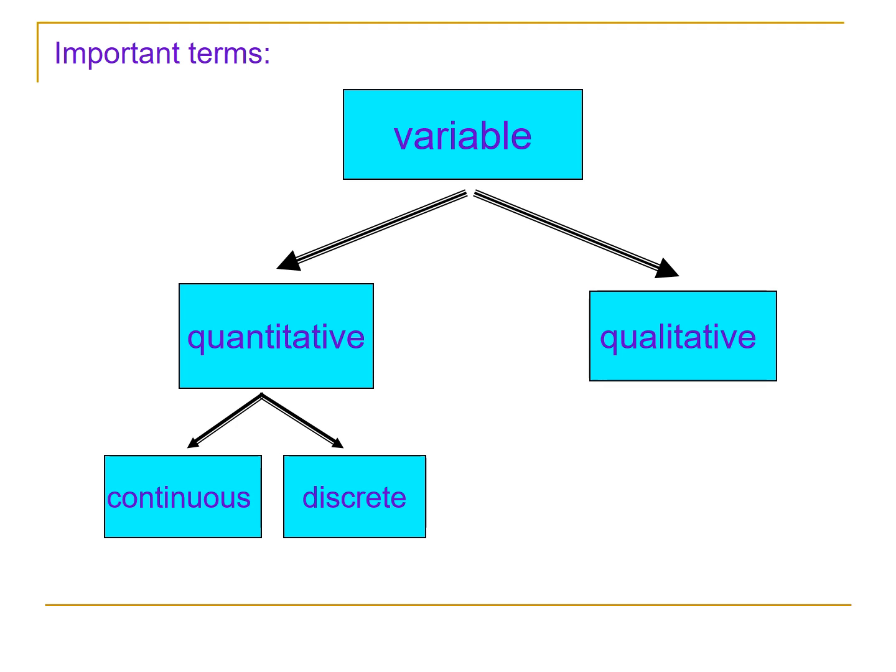A variable is discrete when you can only have counting values, like the number of students enrolled in a statistics subject. You cannot say that there are 30.5 students enrolled. You cannot explain what the 0.5 means. Therefore, the variable number of students enrolled is an example of a discrete quantitative variable. Another example is the number of cars in a parking lot.